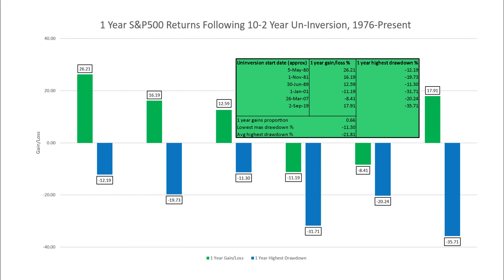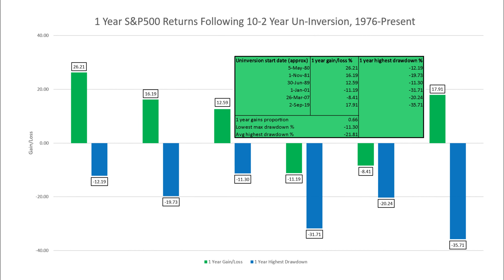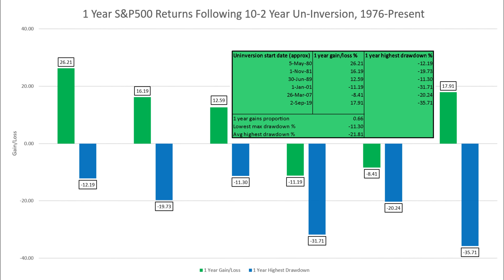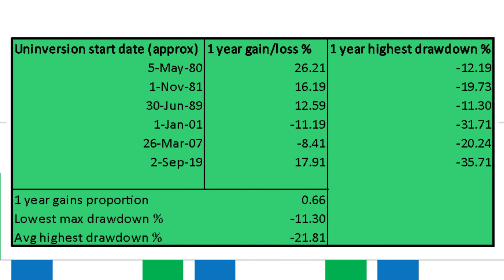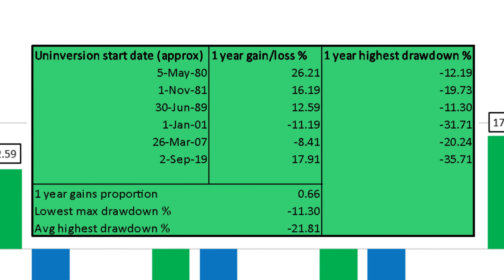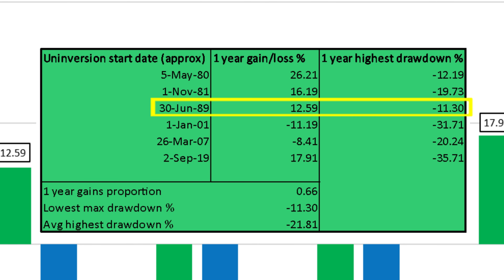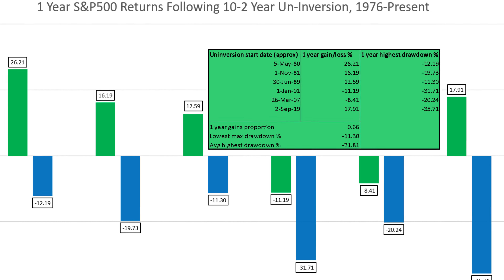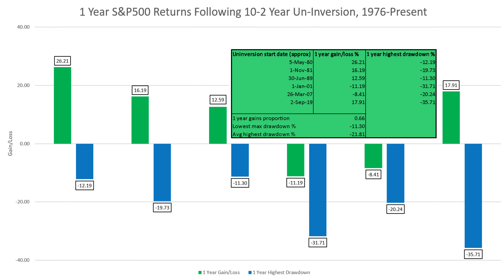Here we see the one-year S&P 500 returns following the initial uninversion between the two and ten-year yield curve over the past 50 years. Clearly it's a reliable sign that bad times in the equity market usually follow, with the lowest drawdown being 11.26% off the highs and an average drawdown of 21.8%. Somewhat surprisingly, however, the market recovered and posted one-year gains in four out of six instances in this sample.